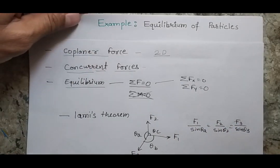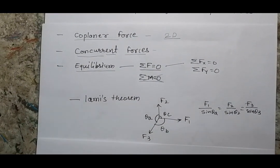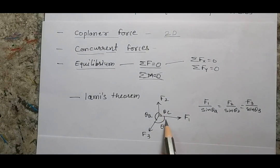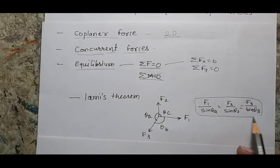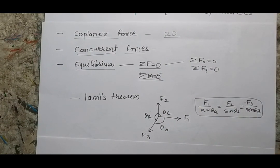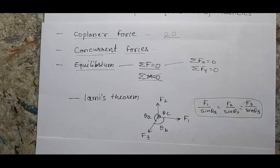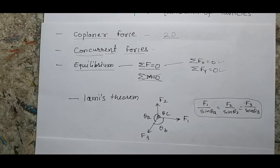We can also apply Lamy's theorem to solve problems — if there are three forces and the opposite angles are available, we can use this formula to find unknown values. An important point: we can solve a joint or point where maximum two unknowns exist, because we have two equations and can solve only two unknowns at a time for a particular particle equilibrium.